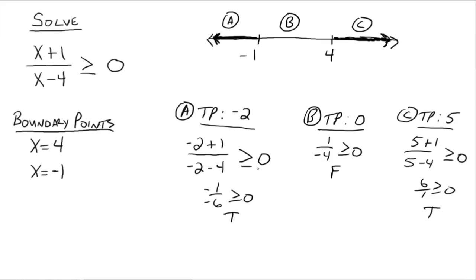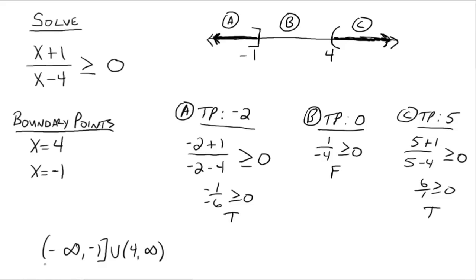Now, are negative 1 and 4 included or not? Since it's greater than or equal to, we'd normally include them, but we have to be more careful with rational expressions. We can't have the denominator equal to 0, so even though the inequality says to include them, we can't use 4 because it makes the expression undefined. So we use a parenthesis at 4 and a bracket at negative 1. In interval notation: negative infinity to negative 1 bracket, union 4 to infinity.